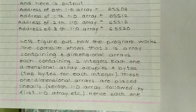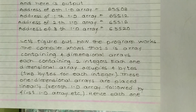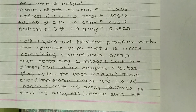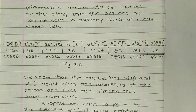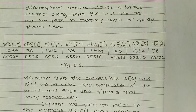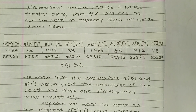Let us figure out how the program works. The compiler knows that s is an array containing four one-dimensional arrays, each containing two integers. Each one-dimensional array occupies four bytes — two bytes per integer. These one-dimensional arrays are placed linearly: the 0th 1D array followed by the 1st 1D array, and so on. Hence each one-dimensional array starts four bytes further along than the last.